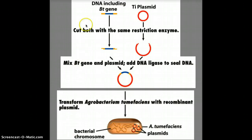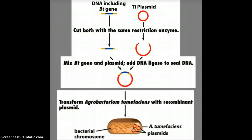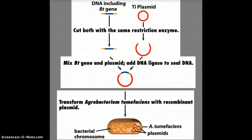The gene of interest here is called the BT gene. This gene is produced naturally by a species of bacteria called Bacillus thuringiensis — you don't have to remember that. This gene naturally produces a toxin that kills insects. So we can genetically engineer plants so that the plants naturally produce the toxin that kills insects, allowing farmers to not have to apply as many pesticides, because the plants are then naturally resistant to the insects.